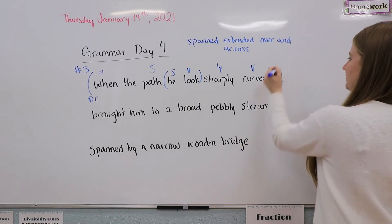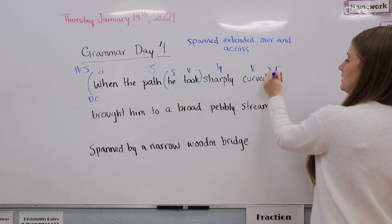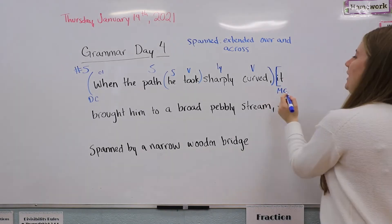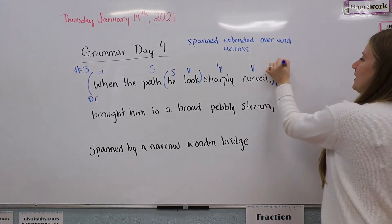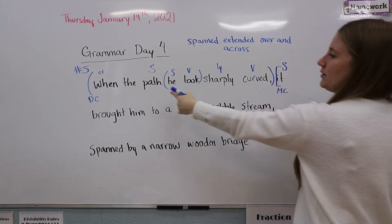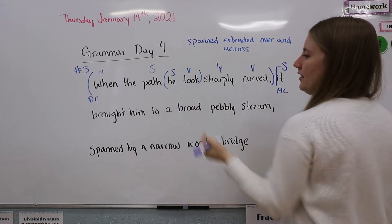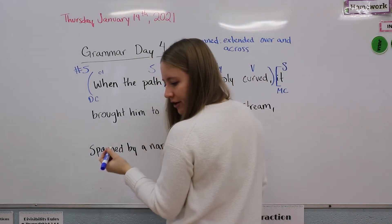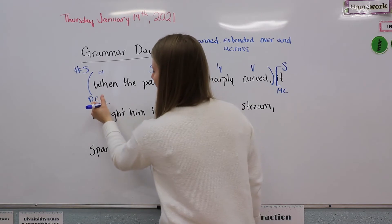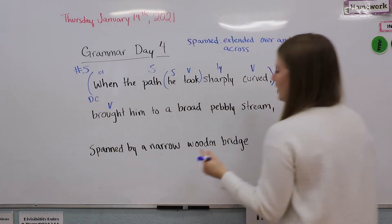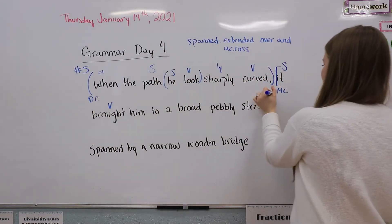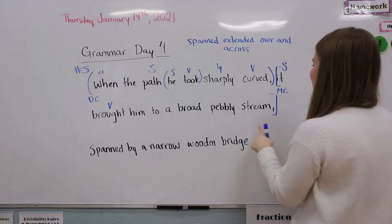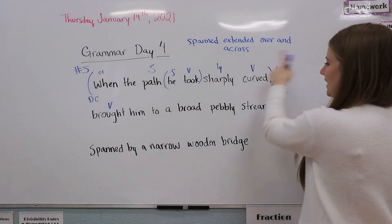We're going to start our next clause here, and it gets to be our main clause. Our subject is 'it,' because we're still talking about the path. And our verb is 'brought.' We're going to end this clause here, because the comma helps give us a clue that that's the end of the clause. And that's our main clause.